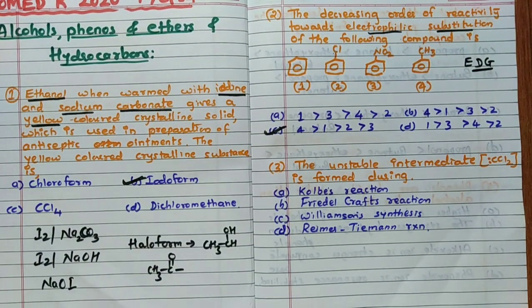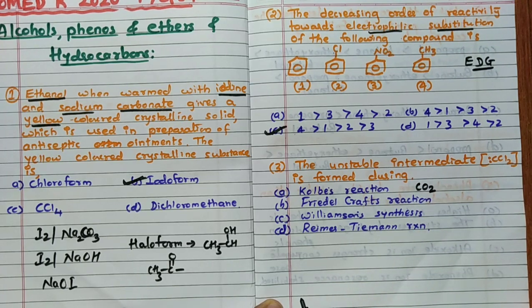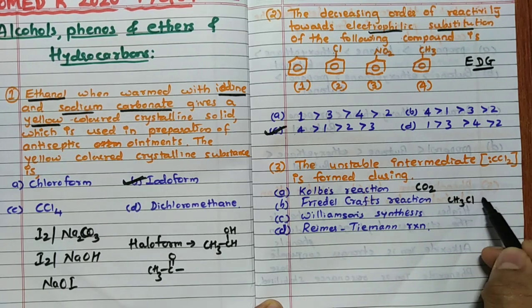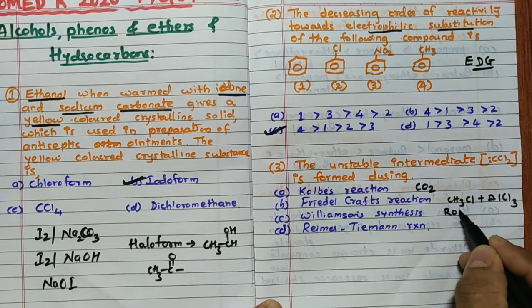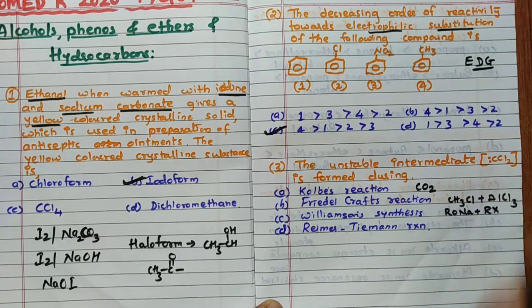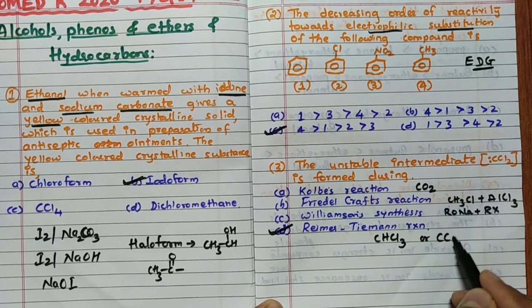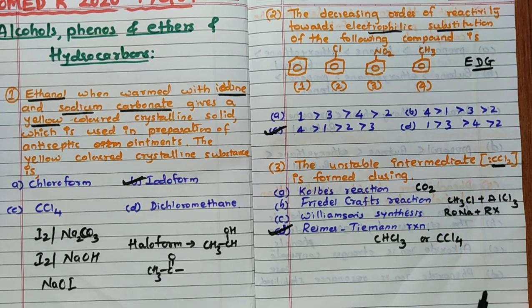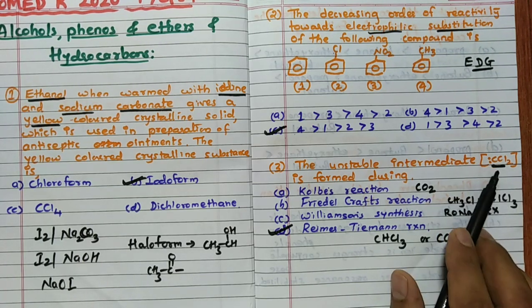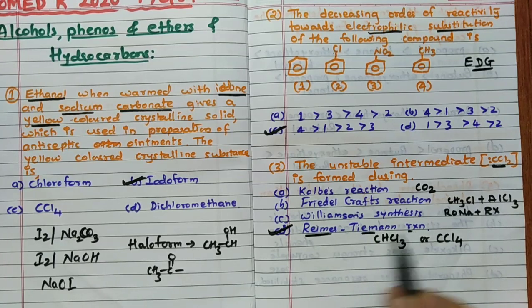The unstable intermediate CCL2 is formed during - it's very simple question actually, depending on the option you can easily tell. Kolb's reaction remember, there we will use carbon dioxide, definitely carbon dioxide, there is no Cl itself. Friedel-Craft's reaction we are going to use CH3Cl in presence of anhydrous AlCl3. Here also CCL2 question will not come. Williamson's ether synthesis remember, R-O-Na plus R-X you are going to use. Here also this is not possible. But the very important thing is Reimer-Tymon reaction where you are going to use CHCl3 or CCL4. So CCL2 is going to form, CCL2 is known as electrophile. Although it looks like lone pair is there, but remember it is an electrophile CCL2, so dichlorocarbene we call it as. So the answer is D.